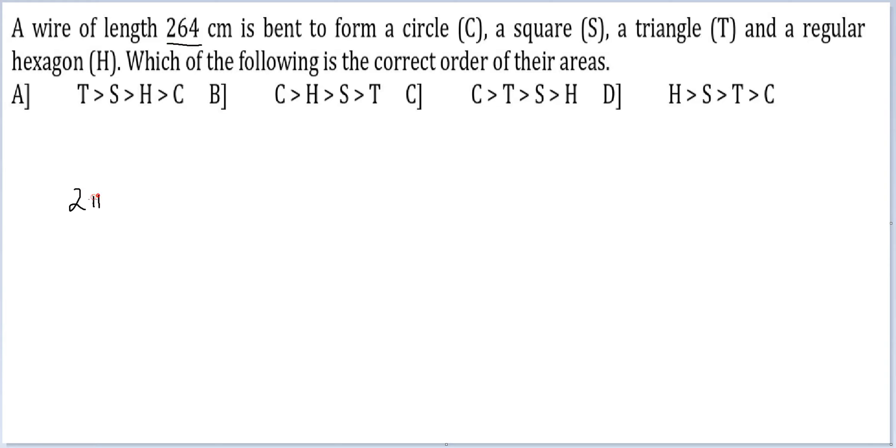so the circle 2πr equals 264 or r equals 132/π. So the area would be πr² which equals π/(π²) × 132 × 132. This cancels. This is the area for circle.